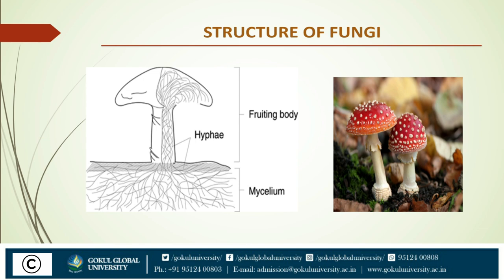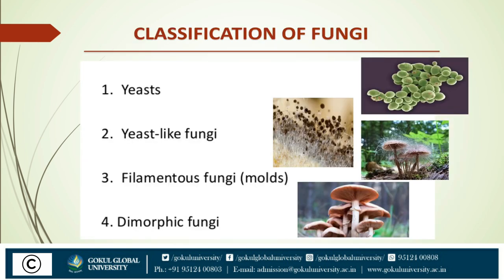We will now understand the classification of fungi. Based upon morphology, fungi are classified into the following four types. The first is unicellular fungi, which occur as spherical and reproduce by simple budding. The second type is yeast-like fungi — fungi which grow partially as yeast and partially as elongated cells resembling hyphae, known as pseudo-hyphae, are called yeast-like fungi.